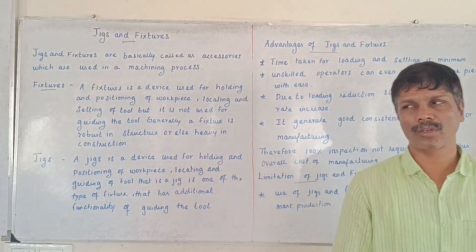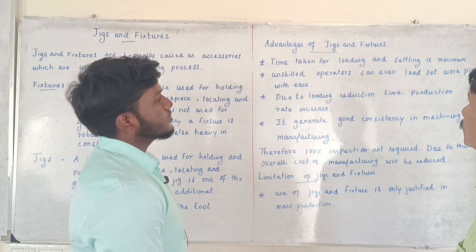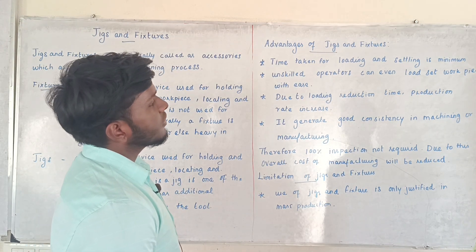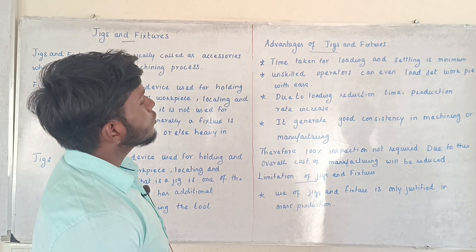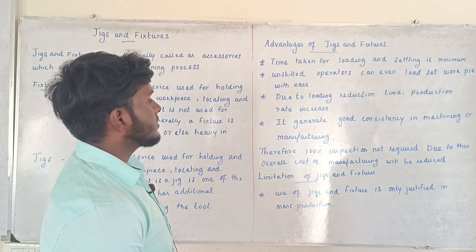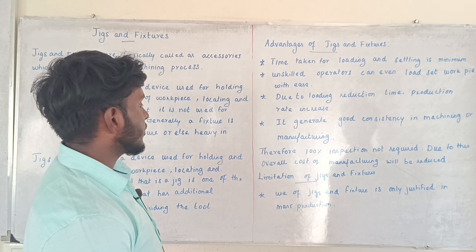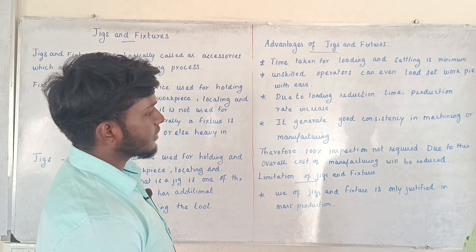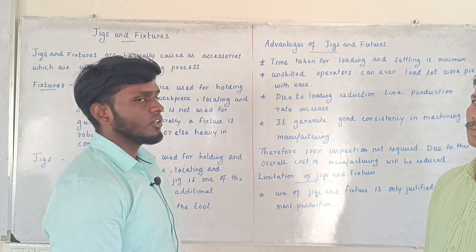The advantages of Jigs and Fixtures are: time taken for loading and setting is minimum; unskilled operators can easily load and set the workpiece; due to reduction in loading time, production rate increases; it generates good consistency in machining or manufacturing; therefore 100% inspection is not required; and overall cost of manufacturing will be reduced.